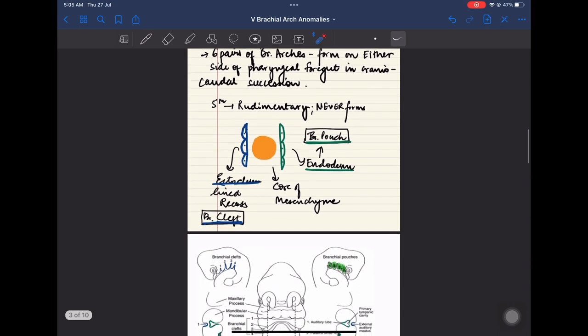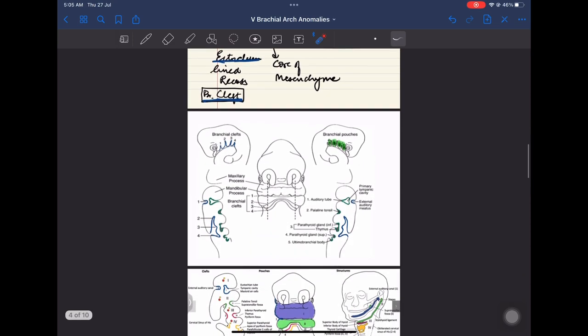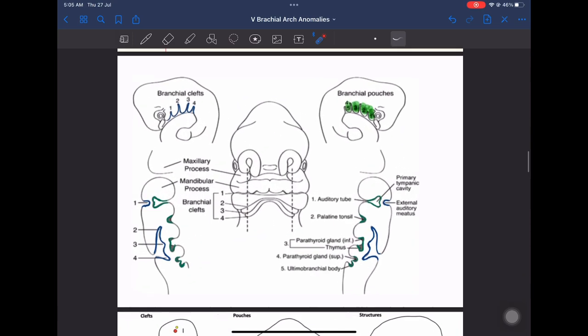Now what is the structure of a branchial arch? First there is a core of mesenchyme. Then there is a lining of endoderm and there is a lining of ectoderm outside. Endodermal lining forms the branchial pouches and ectodermal lining forms the branchial cleft outside. Now let's look at this picture.